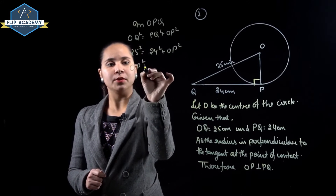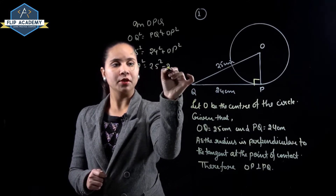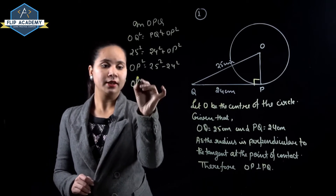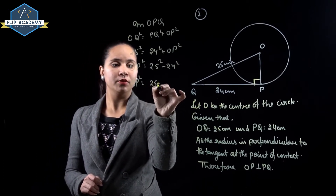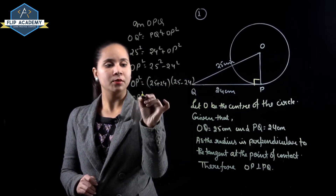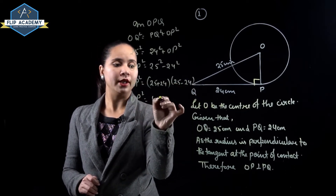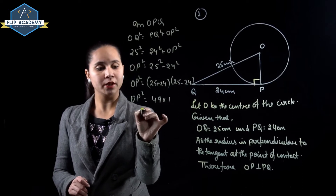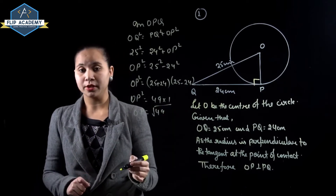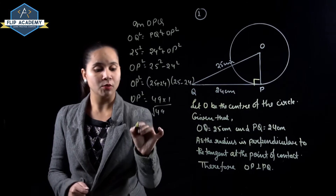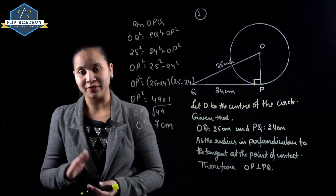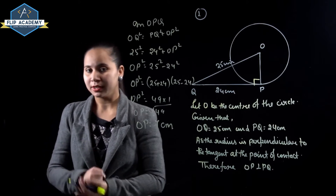OP squared is equal to 25 squared minus 24 squared. Applying the a squared minus b squared identity: (25 + 24)(25 − 24) = 49 × 1 = 49. So OP is equal to the square root of 49, which is 7 cm. That is the radius of the circle.